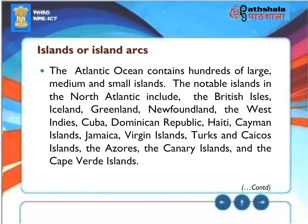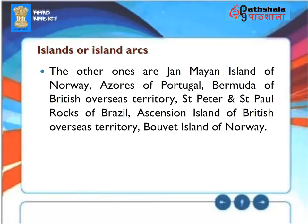Islands: The Atlantic Ocean contains hundreds of large, medium, and small islands. Notable islands in the North Atlantic include the British Isles, Iceland, Greenland, Newfoundland, the West Indies, Cuba, Dominican Republic, Haiti, Cayman Islands, Jamaica, Virgin Islands, Turks and Caicos Islands, the Azores, the Canary Islands, and the Cape Verde Islands. Others include Jan Mayen Island of Norway, Azores of Portugal, Bermuda of British Overseas Territory, St. Peter and St. Paul Rocks of Brazil, Ascension Island of British Overseas Territory, and Bouvet Island of Norway.